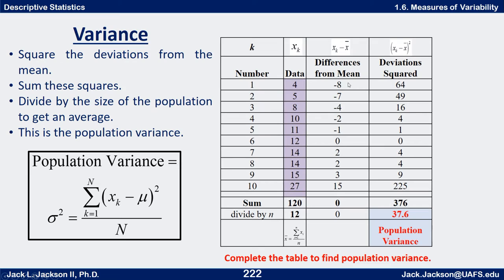Here are the squared deviations: negative 8 squared is 64, negative 7 squared is 49, negative 4 squared is 16, negative 2 squared is 4, negative 1 squared is 1, 0 squared is 0, 2 squared is 4, 2 squared is 4, 3 squared is 9, and 15 squared is 225. Adding all of these together gives 376 as the numerator. Dividing by 10 gives 37.6, and that is the population variance.